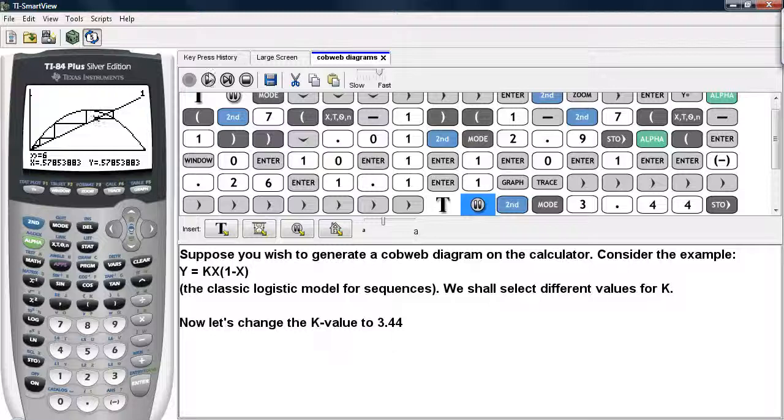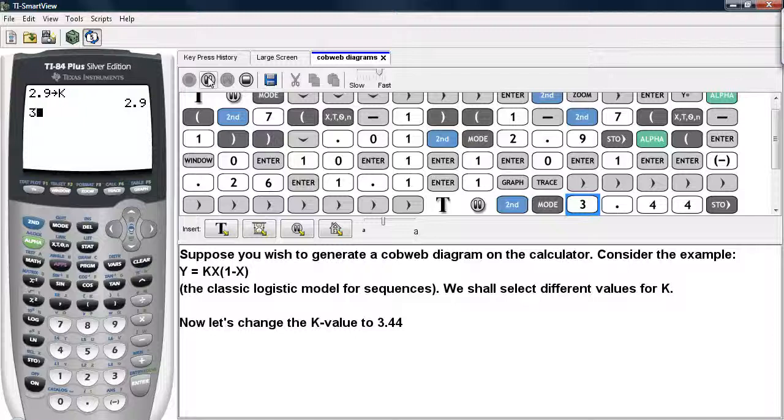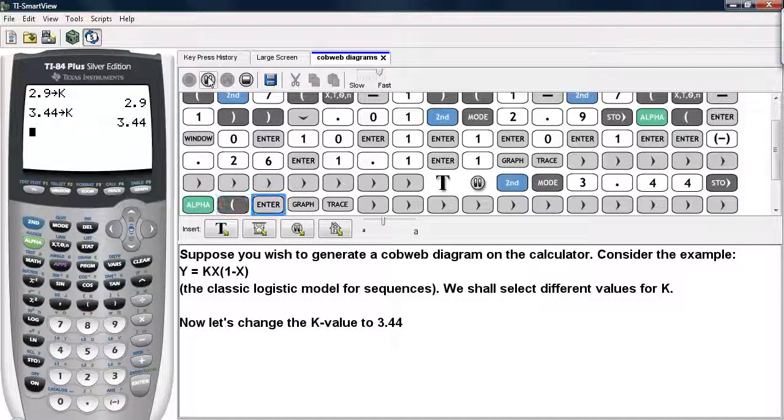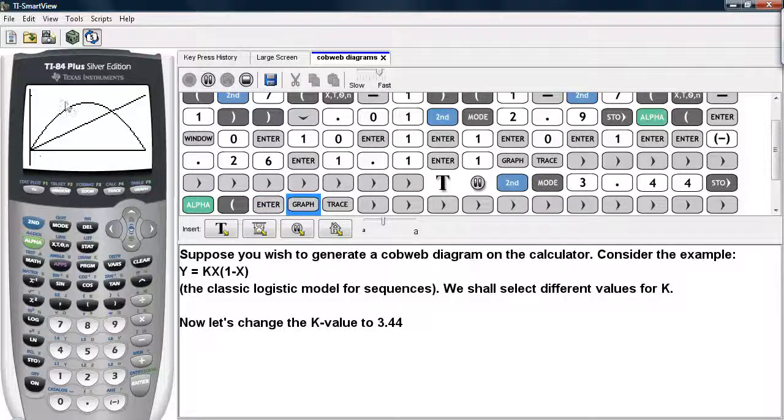I'm going to change the k value to 3.44 now and we'll see a slightly different picture. So I'll go ahead and go back to the home screen, type in 3.44 and then I'll store that as k. And then I'll go back to the graph.